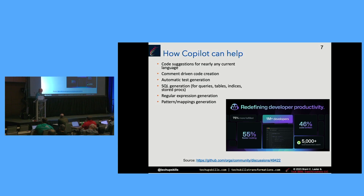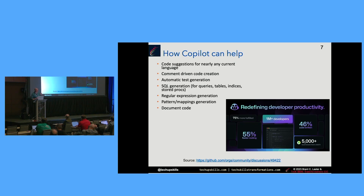Pattern mapping generation: there's an example I've done where you tell it to generate a mapping of states to area codes. You can have it generate data — dummy data and so on — though you're limited a bit depending on how much you're trying to generate at any one time. There are ways to work around that. Document code: you can tell Copilot to document your code. The documentation will be specific to what the code does, but it will explain it in a more human-readable form. You can also tell it to explain the code — what does this code do — and it will tell you in English in a more human-like dialogue.